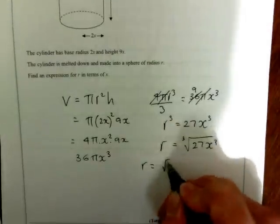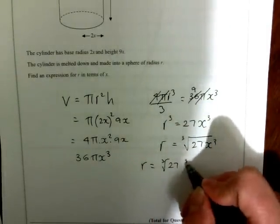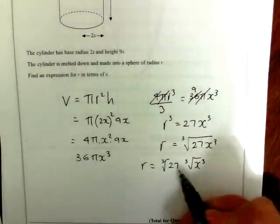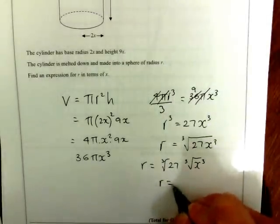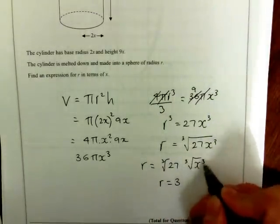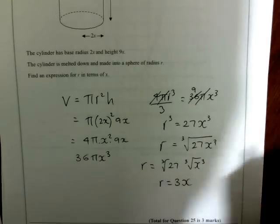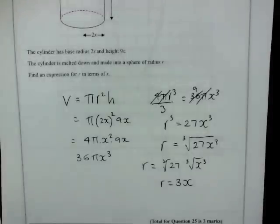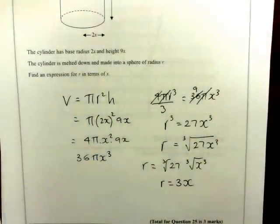r equals the cube root of 27 times the cube root of x³. The cube root of 27 is 3, and the cube root of x³ is x. So the answer is r = 3x. That's question 25.